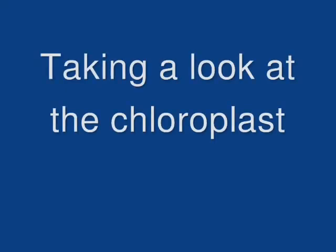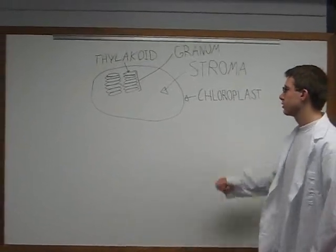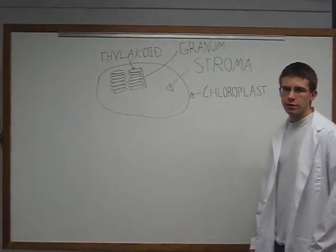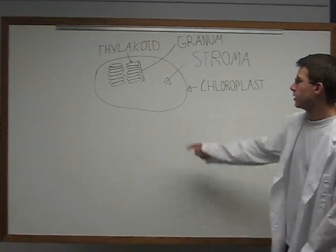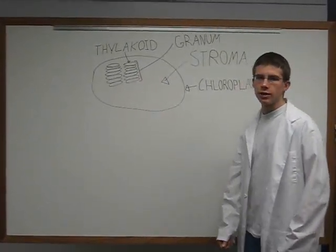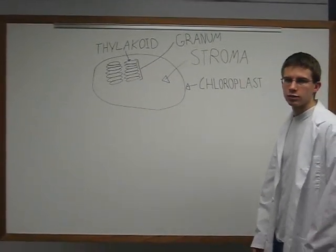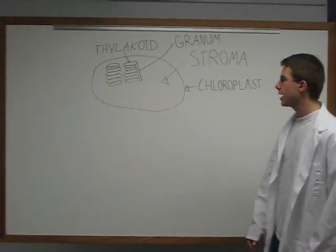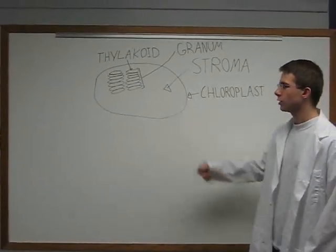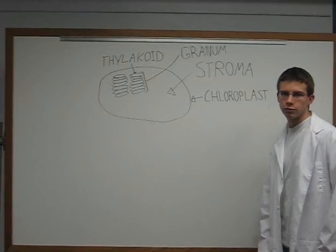Photosynthesis is comprised of two main cycles: the light reaction and the dark reaction. This is a chloroplast, and this is where the light and dark reactions take place in a plant cell. The thylakoid membranes are where the light reactions take place. The dark reactions take place in the stroma, and those reactions are called the Calvin cycle.